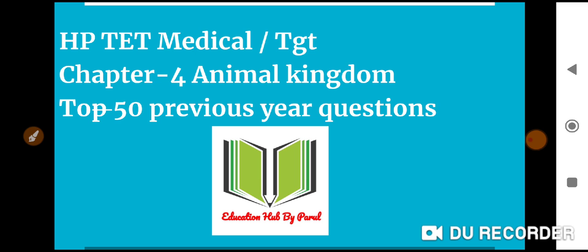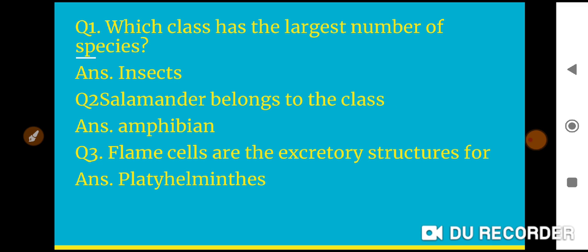Now I will be discussing chapter 4, Animal Kingdom. These are the chapters of class plus one. First plus one questions complete, and then we will start with the biology book of plus two class. So without wasting our time, let's move on to the first question.